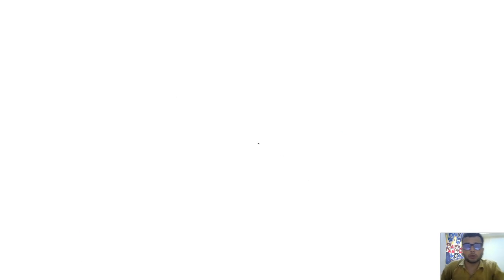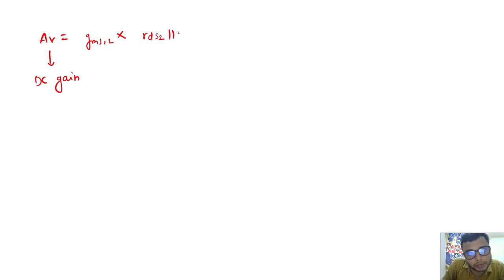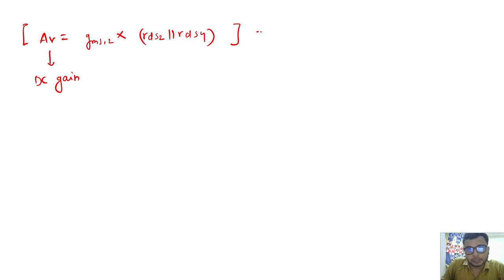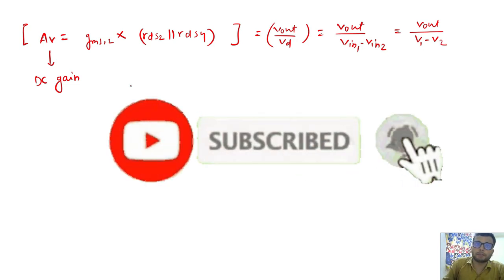So this is the DC gain expression. The DC gain, which is Vout/Vd or Vout/(V1 − V2), is equal to GM(1,2) × (RDS2 ∥ RDS4). This is the basic gain of the five transistor OTA structure.